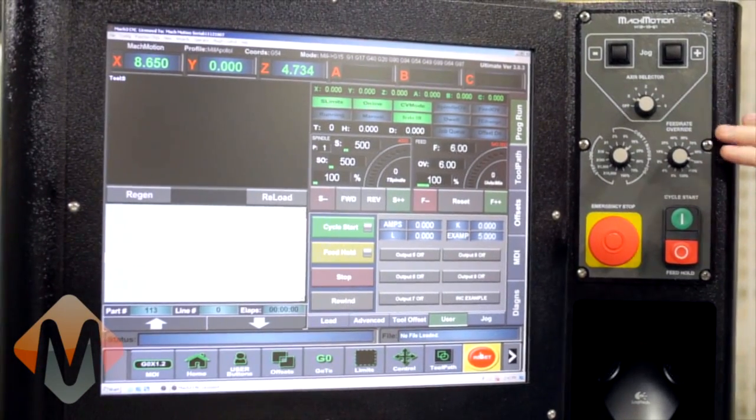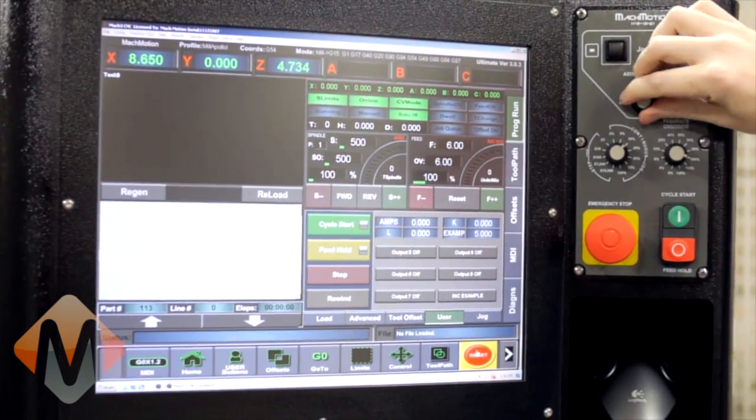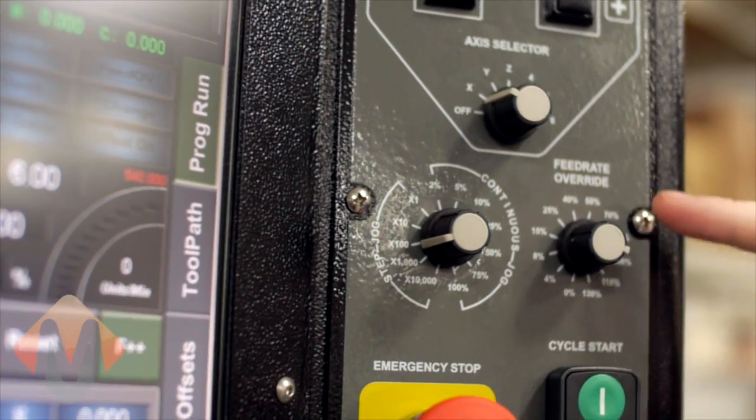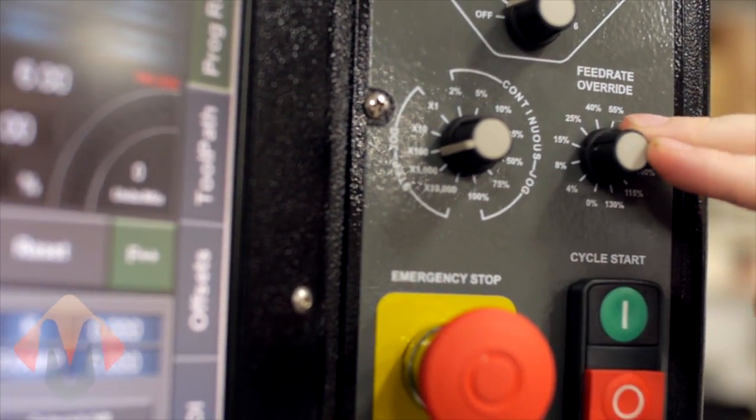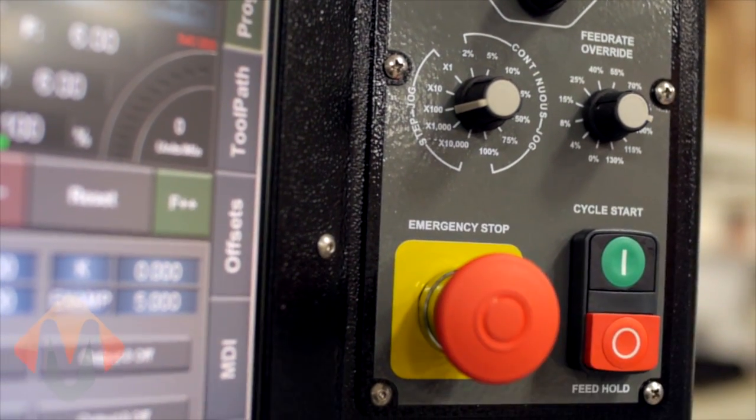The control has an operator panel here. It's got jog buttons, axis selector you can have up to six axes. We've got continuous jog and step jog, various speeds, and then feed rate override for controlling the speed of a program while you're running it. Then we've got cycle start, feed hold, and emergency stop.